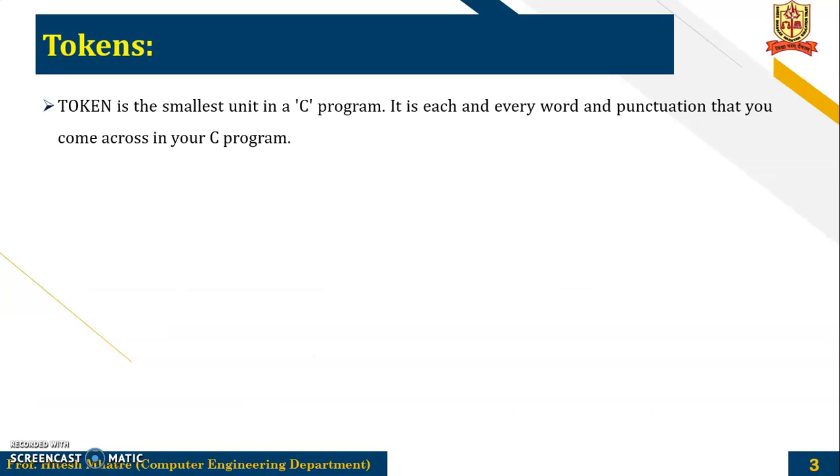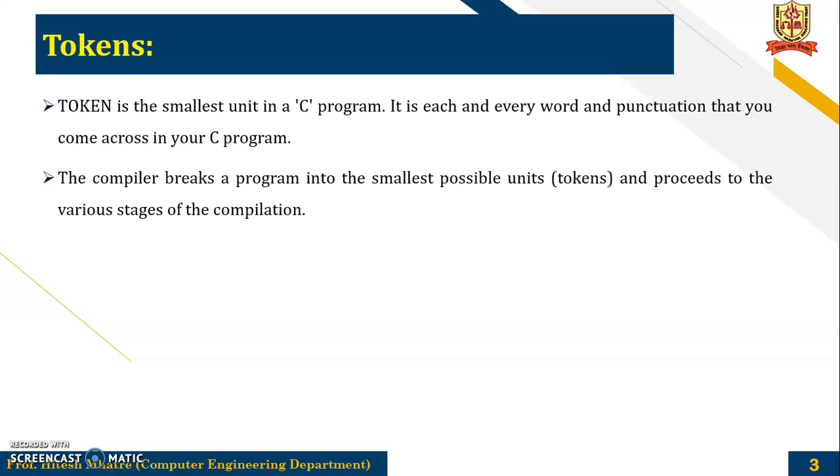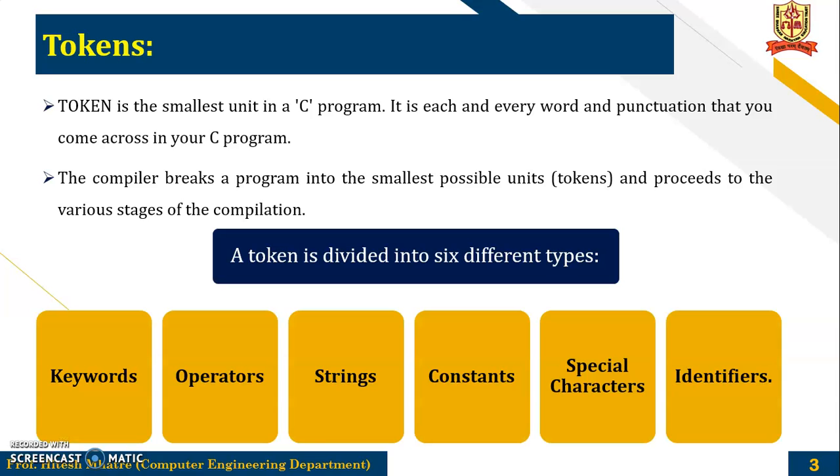Next is a Token. A Token is the smallest unit in a C program. It is each and every word and punctuation that you come across in your C program. The compiler breaks a program into the smallest possible units that are nothing but tokens and proceeds to the various stages of compilation. A Token is divided into six different types: Keywords, operators, strings, constants, special characters and identifiers.